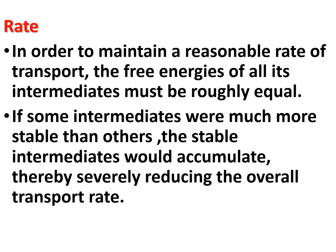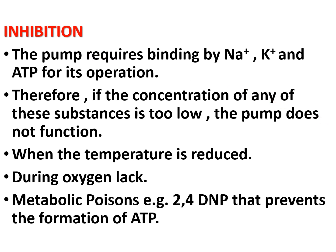Regarding transport rate: to maintain a reasonable rate of transport, the free energy of all intermediates must be equal. If some intermediates were much more stable than others, they would accumulate and severely reduce the overall transport rate. Inhibition occurs when the pump lacks sufficient sodium, potassium, or ATP. Low temperature, oxygen lack, and metabolic poisons like 2,4-dinitrophenol, which prevent ATP formation, also inhibit the pump.